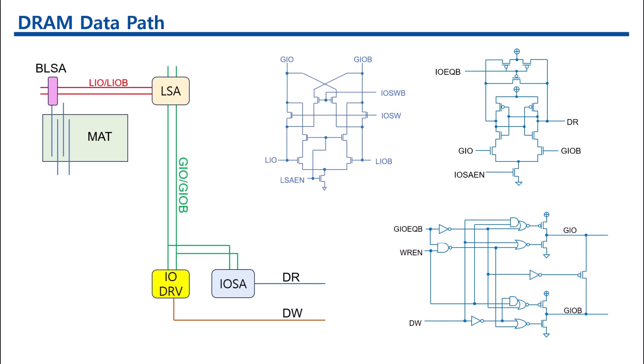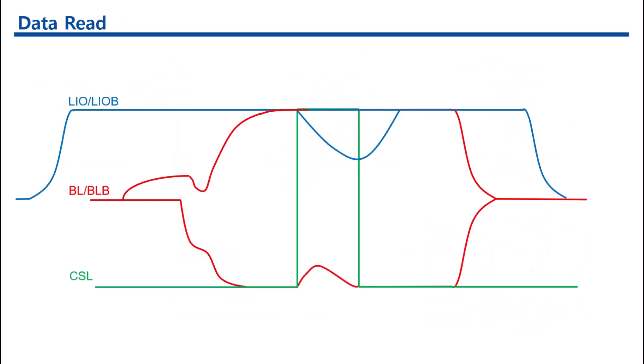Precharge levels: GIO and GIOB are precharged to VDD, the full supply voltage. This ensures that during read operations, the voltage levels are stable and can be accurately sensed. LIO and LIOB are initially precharged to half VDD. When the memory section is selected, the voltage level changes to VARE. This variation allows the sense amplifier to detect differences and determine the stored data.